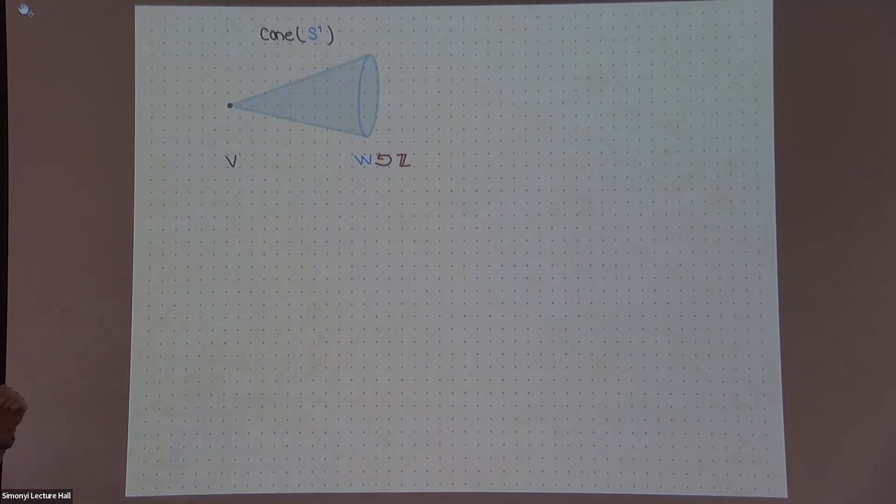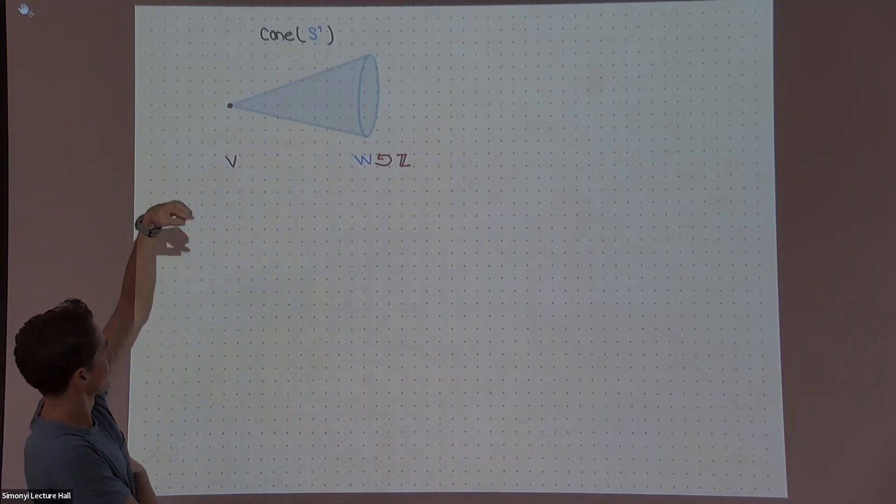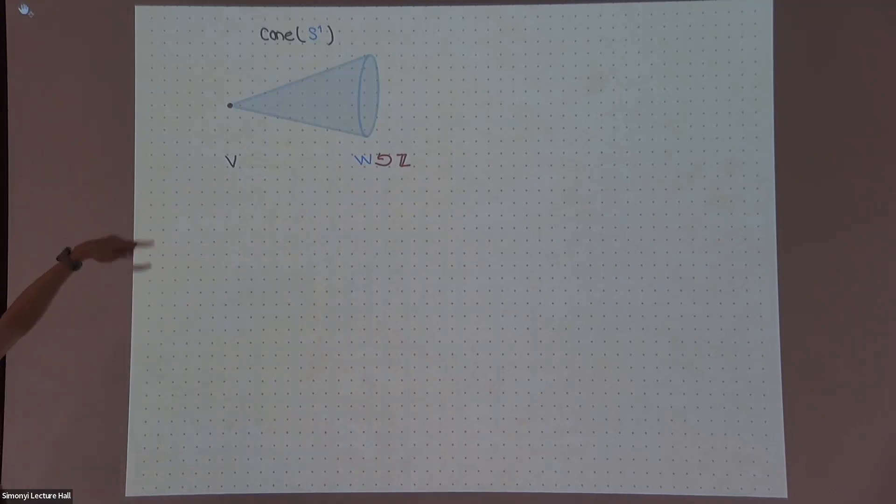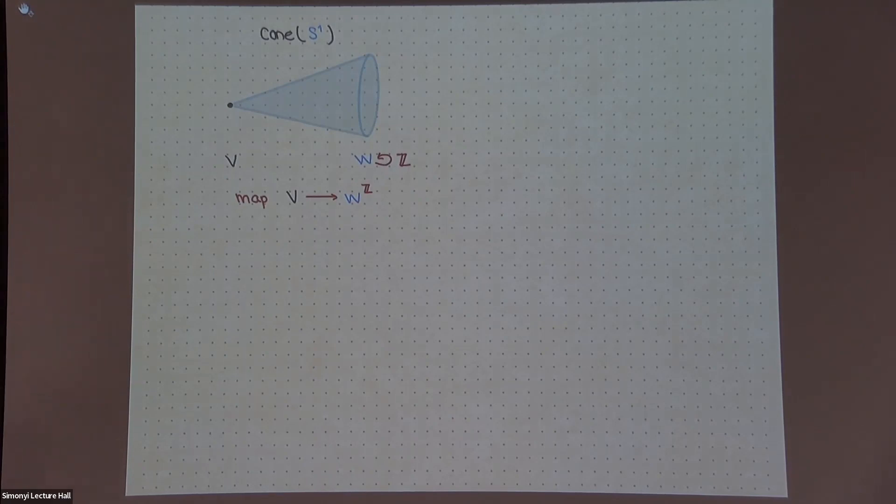And then there's some data you need to provide. In addition, and maybe how to think of how to figure out what data you need to provide is like any path that starts at this black point and exits into the other point, somehow they're all kind of the same. So like, where does the Z come from? The Z comes from there being, you know, different maps that you can wind around the circle many times, and they're not homotopic, but they all become homotopic if you have this. So what you need to provide is a map from this V to the fixed points under this action of Z of W.